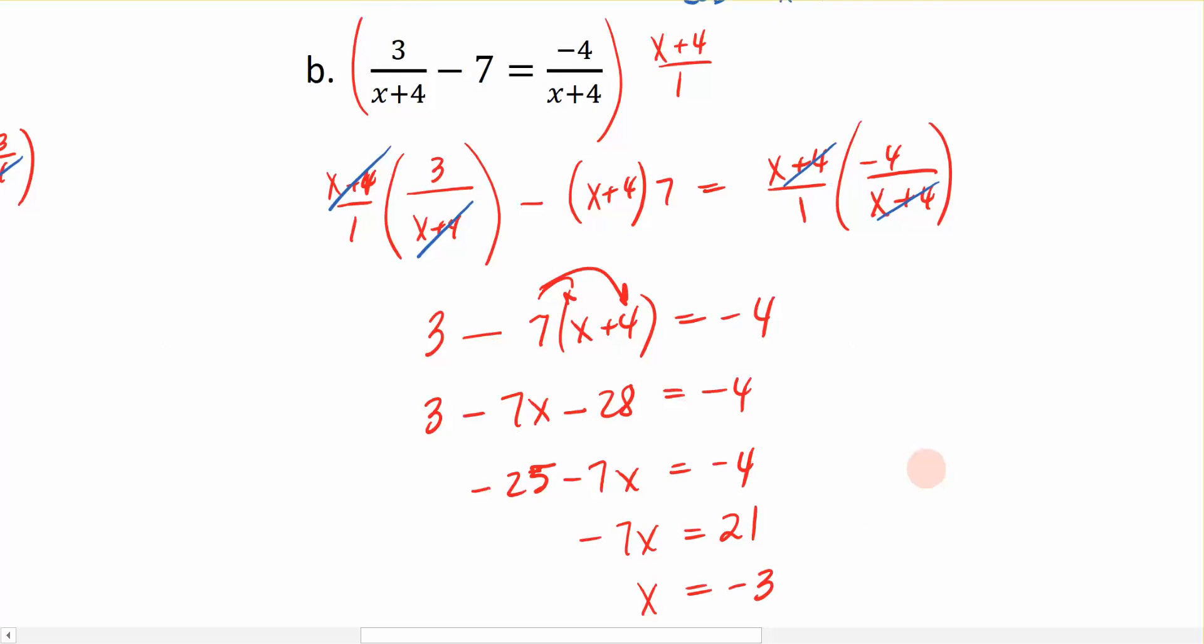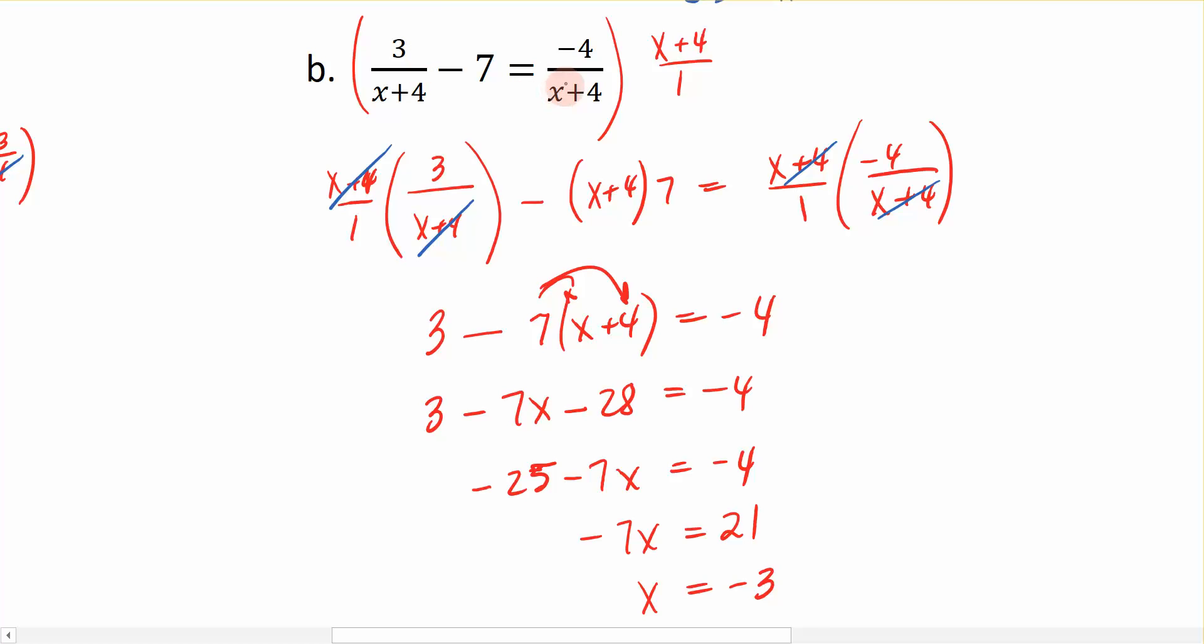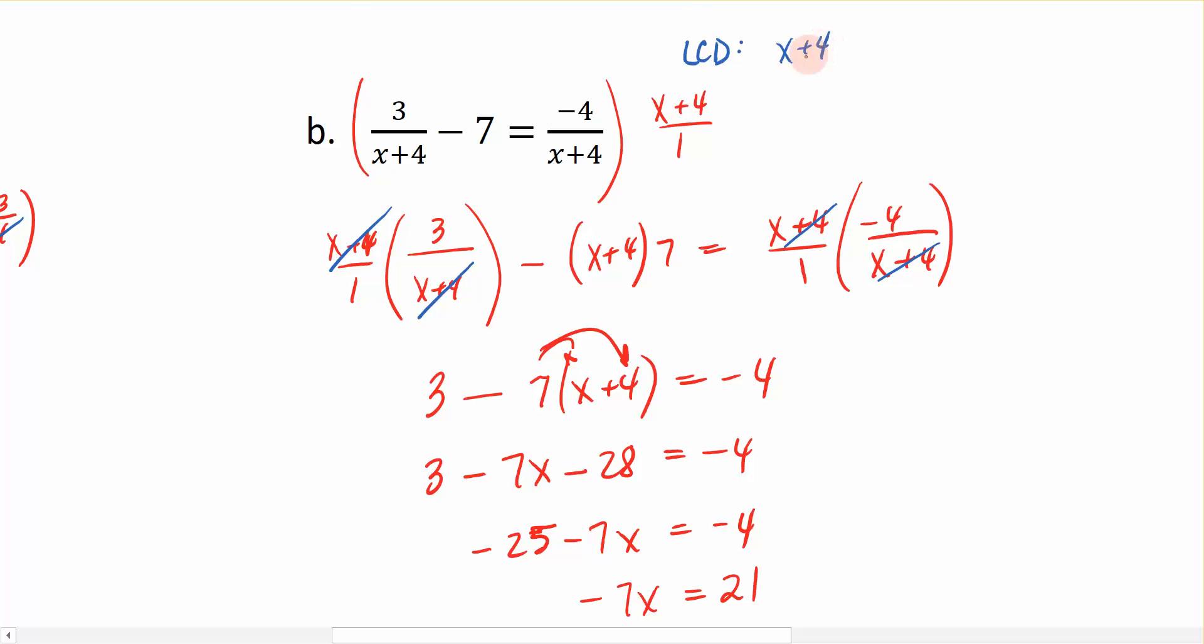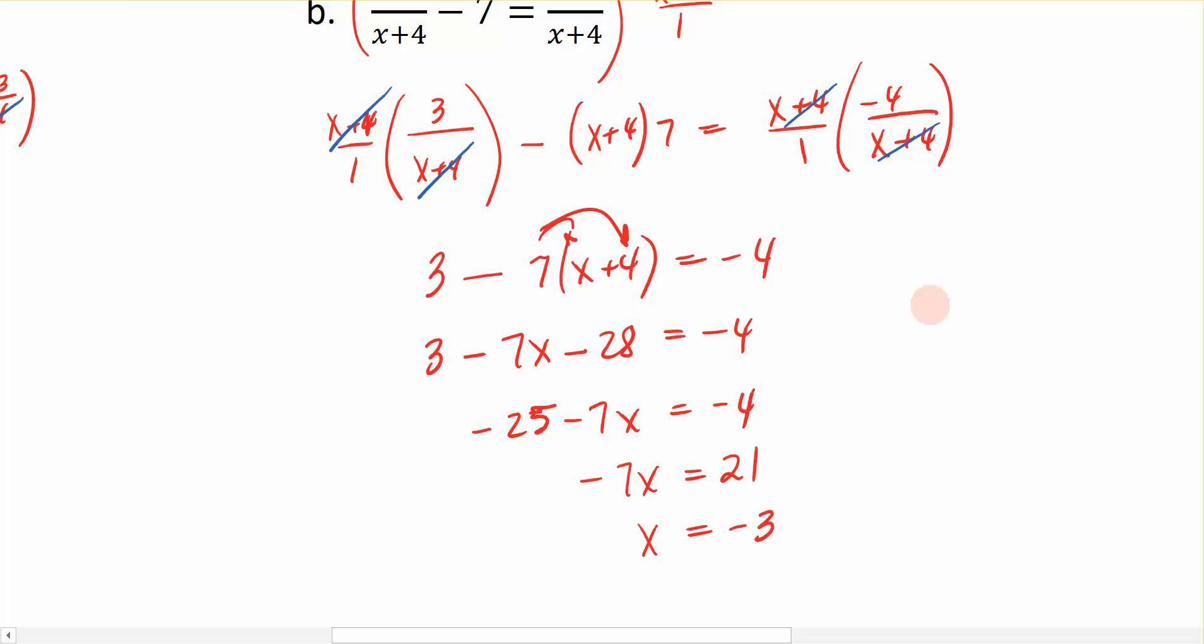So for this particular problem, where I started out with this rational equation right here with an expression in the denominator, I multiplied through by the least common denominator of x plus 4, and I found out that x is equal to negative 3.